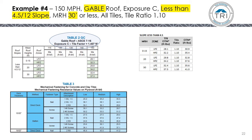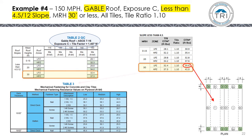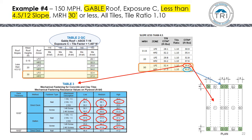For example four, let's switch to gable roofs, Exposure C, less than 4.5:12 slope, mean roof height to 30 feet. We switch to Table 2GC and get our LPZ and HPZ uplift moments, factoring in our tile ratio. For the LPZ, low profile and flat tile methods work; medium profile and high profile attachment methods also work. For the HPZ — the corners at the bottom and top of the gable end — the fastening methods circled in blue are the ones that work.